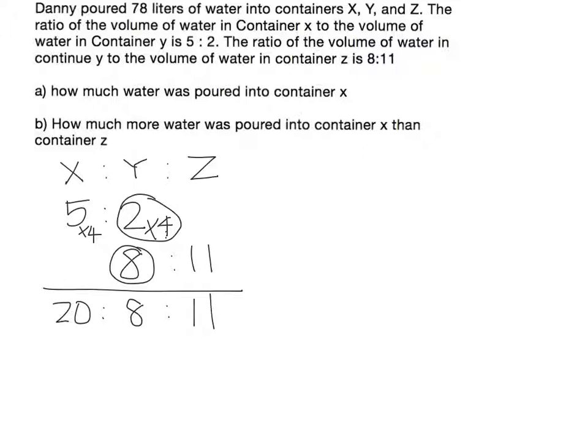From this, they said that the total amount of water is 78 liters. So we will add up everything. 20 units plus 8 units plus 11 units equals 39 units.